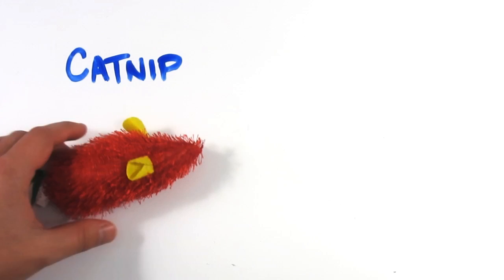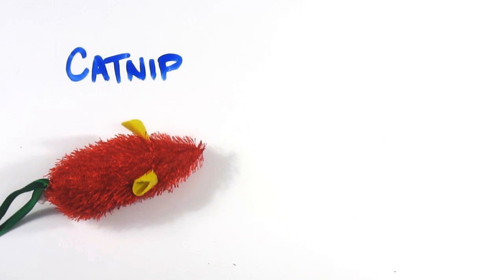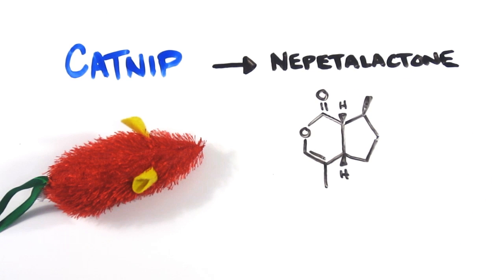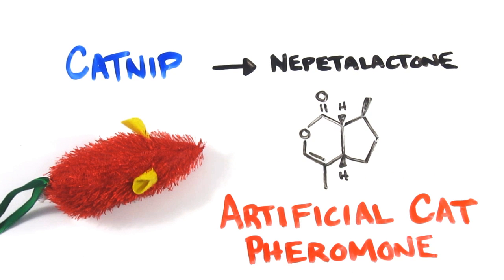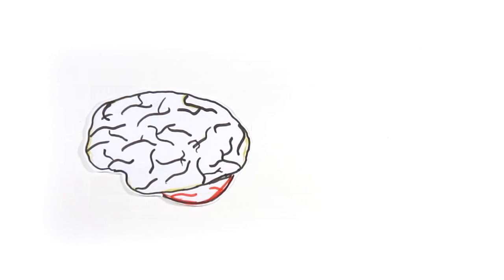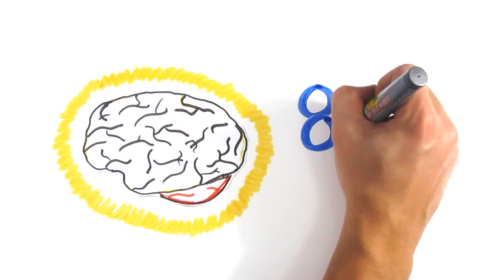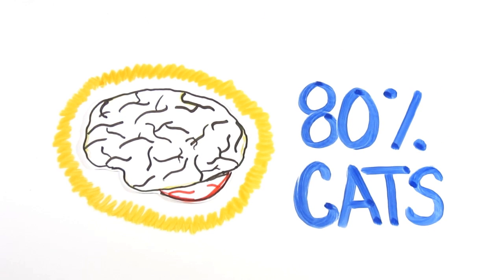Or that catnip really is like a drug for cats? One of its volatile oils called nepetalactone enters the cat's nasal tissue and acts like an artificial cat pheromone. The sensory neurons are stimulated and ultimately trigger a behavioral and sexual response in the brain and body in around 80% of cats.